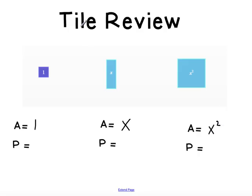We get that because each of these side lengths is 1 for the unit tile. To find the area would be base times height — base is 1, height is 1, so area is 1. When we're talking about perimeter, we are adding those sides up, so this is 4.